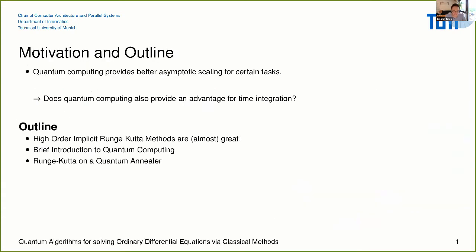So first, what is the motivation behind this? We know that quantum computing provides better scaling for certain tasks, and the question is: can we also take advantage of it for time integration? The outline is: I will first talk about high-order implicit Runge-Kutta methods and why they are almost great, then discuss the obstacle and how we can overcome it, give an introduction to quantum computing, and then talk about our Runge-Kutta algorithm for quantum annealers and quantum computers.